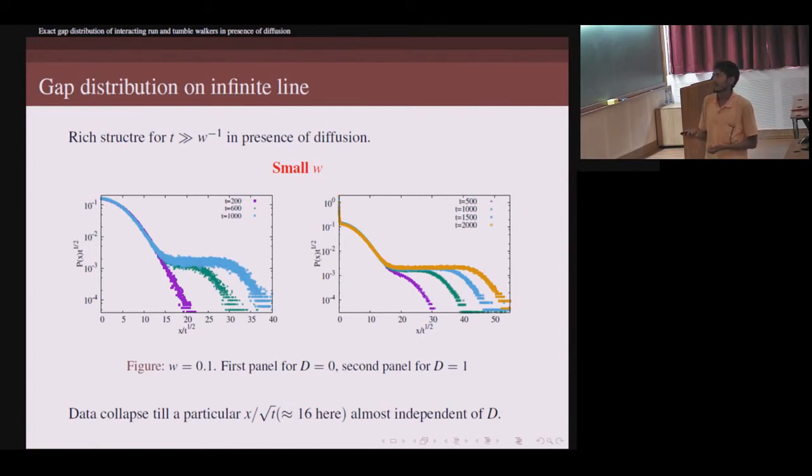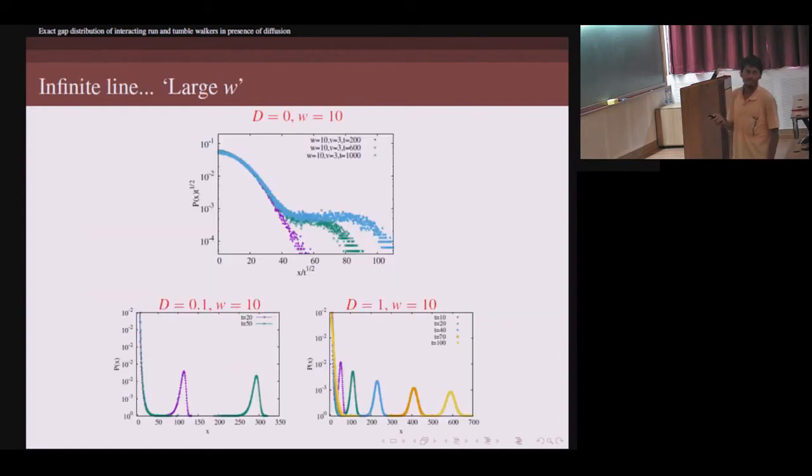Something remarkable happens when you increase the tumble rate. This is for tumble rate 10. When there is no diffusion, the picture is very much like that, and also the scaling and everything. But as soon as you introduce a very small diffusion constant, this valley actually kind of tears apart from this part and just moves like an independent traveler. This thing happens irrespective of diffusion. D is here 0.1, here it is 1, and even for larger values of the diffusion you see this kind of traveling part that is going on.